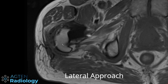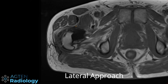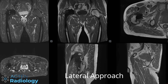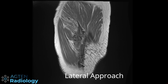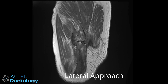Sometimes these susceptibility artifacts are not that obvious. One tip here is to go to your sagittals and go to the most lateral portion or section of this sequence — there you can see the susceptibility artifacts and also the scarring much more easily.